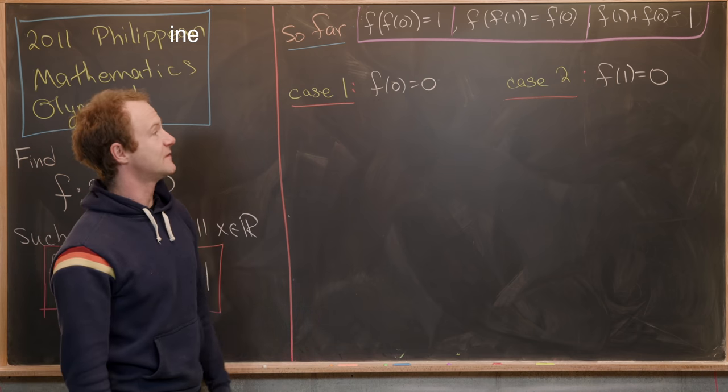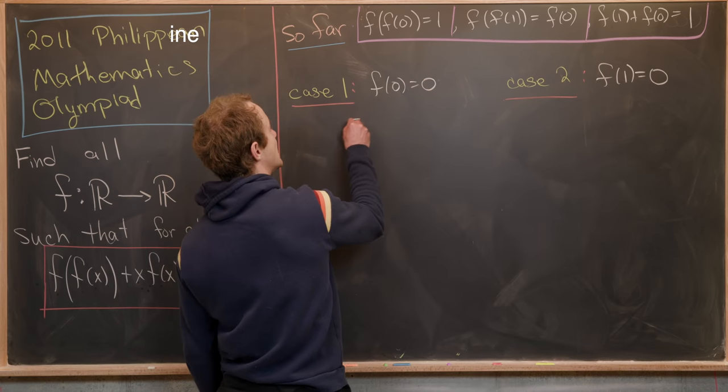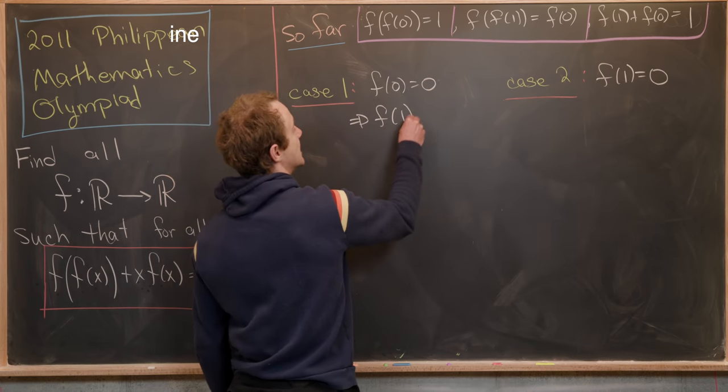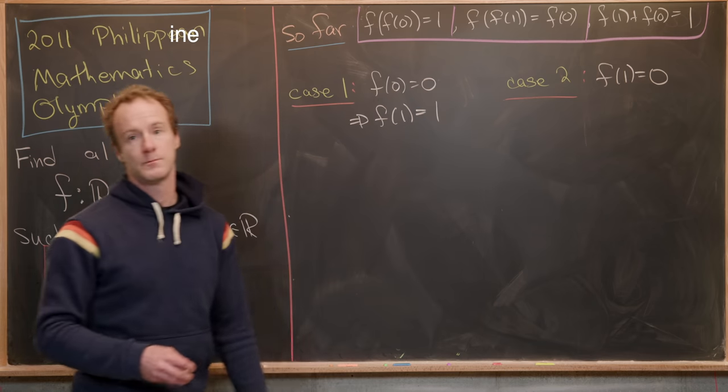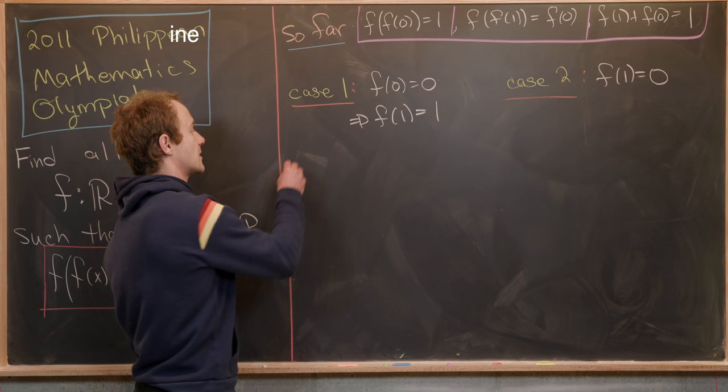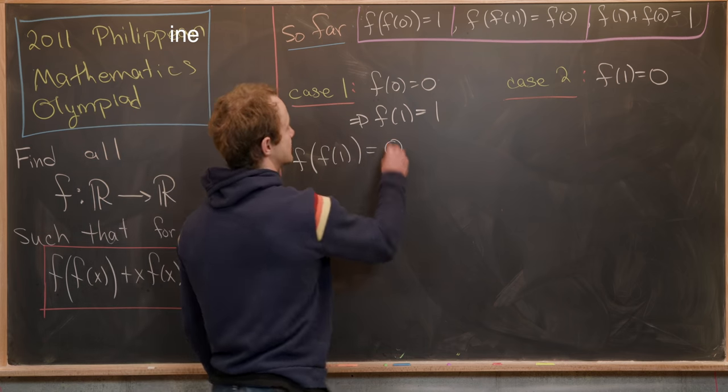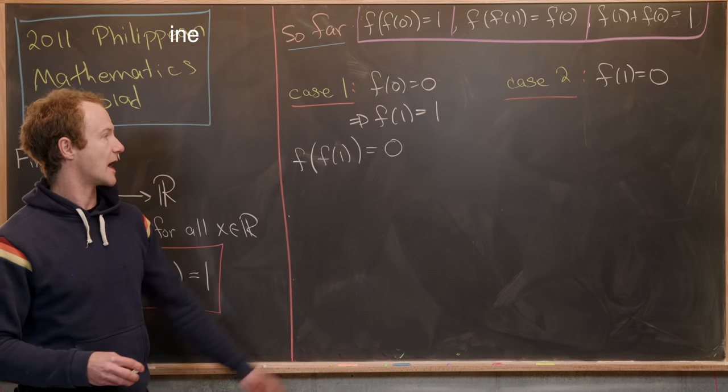So notice if f(0) = 0, by this equation right here, we have f(1) = 1. Okay. But then, by this equation right here, we have f(1) = f(0), which is 0. Okay.